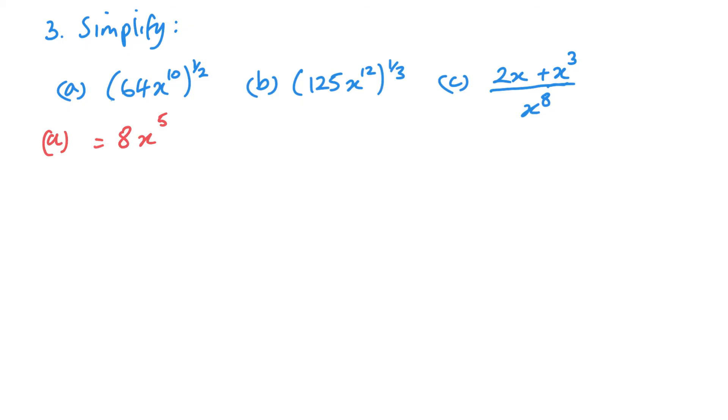I'm looking at B for that one underneath. Again, 125 to the power of a third is cube root of 125, which is 5. And then x to the power of 12 raised to the power of 1 third is going to be multiplying them, x to the power of 4.